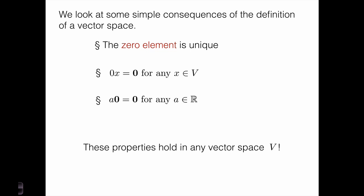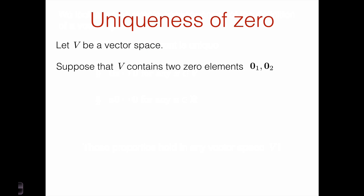So let's go ahead and see how you prove these types of properties. Let's see how to show that the zero element is unique. Suppose that V contains two zero elements, zero one and zero two. What does it mean to be a zero element in V? It means that for any element X in V, X plus zero one is just equal to X.